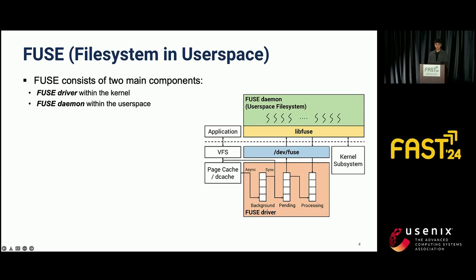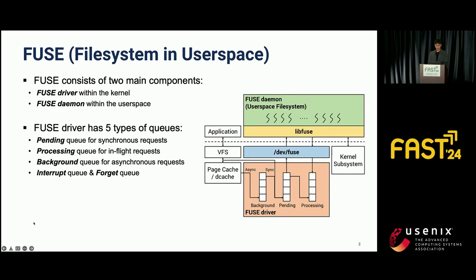Regarding user space file systems, the most well-known software is FUSE, a framework that allows users to build a user space file system. FUSE consists of two main components: the FUSE driver in kernel space and the FUSE daemon in user space. These two components communicate through read-write system calls on the FUSE device file. In the FUSE driver, there are five types of queues: a pending queue for synchronous requests, a processing queue for in-flight requests, and a background queue for asynchronous requests, plus interrupt and forget queues for internal operations.